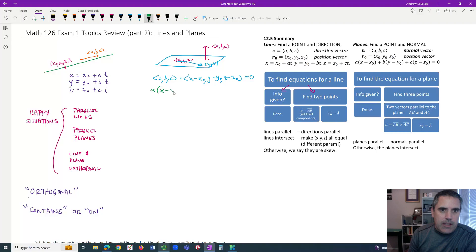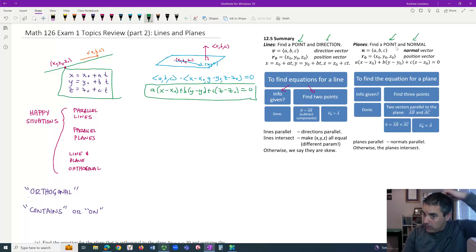So then you get ax minus x zero plus by minus y zero plus cz minus z zero equals zero. So just like with most things in math you need to know what is given and what you want. We want a point and a direction vector and we want a point and a normal vector. Strategically for planes sometimes the information is given and sometimes you need to find two vectors on the plane so you can take their cross product. Often we do that with three points.